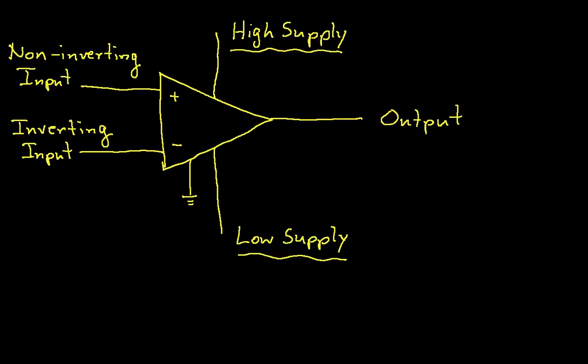The low supply, you connect to typically negative 15 to negative 5, although it's becoming more and more prevalent to have op-amps where the low supply is zero and the high supply is, say, 5 volts.